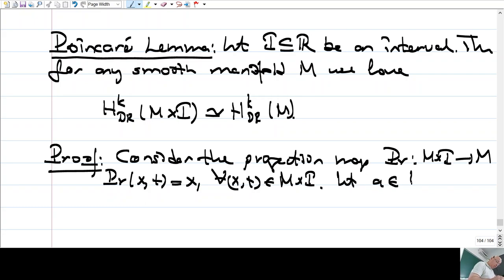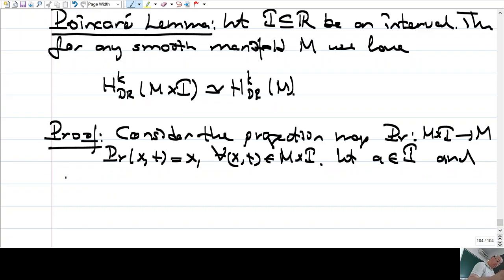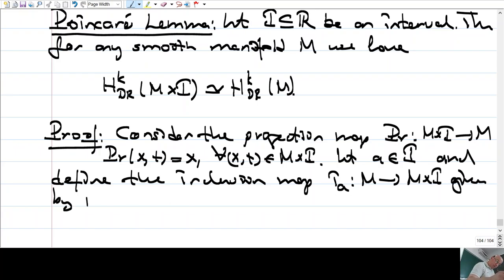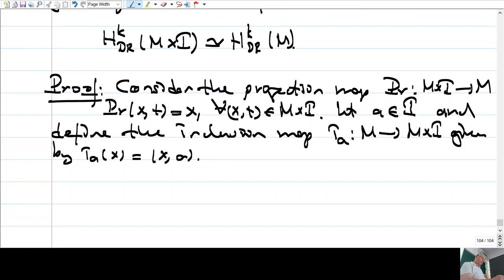Proof is as follows. First consider the projection map from M cross I into M. Let a be any point in the interval, a real number, and define the inclusion map I_a from M into M cross I given by x goes to (x, a). So you just embed your manifold into a slice of this.